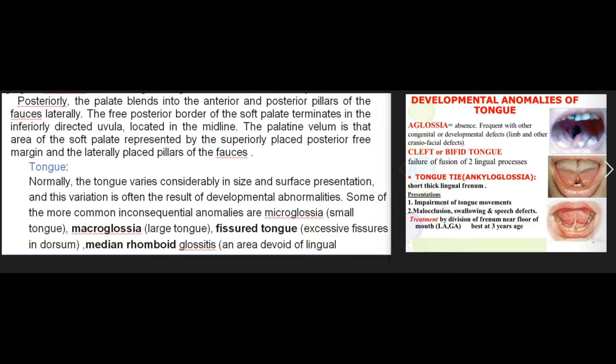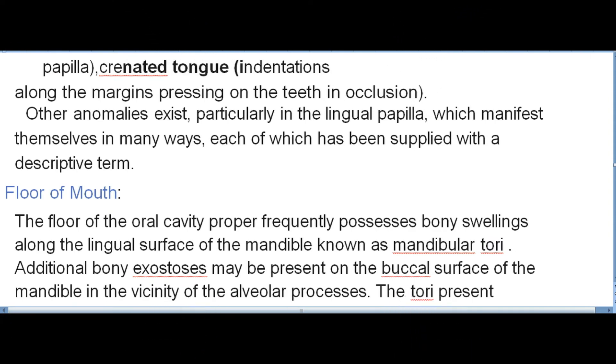The palatine velum is that area of the soft palate represented by the superiorly placed posterior free margin and the laterally placed pillars of the fauces. Normally the tongue varies considerably in size and surface presentation, often as a result of developmental abnormalities. Some of the more common inconsequential anomalies include microglossia (small tongue), macroglossia (large tongue), fissured tongue (excessive fissures in dorsum), median rhomboid glossitis (an area devoid of lingual papillae), and crenated tongue (indentations along the margins pressing on the teeth in occlusion).